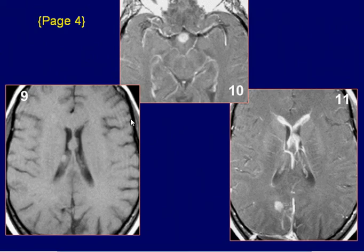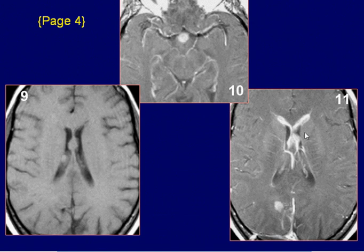Axial T1-weighted image reveals the lesions within both lateral ventricles as iso-intense lesions, and the right parietal-occipital lesion is now well seen on this image. Axial post-contrast T1-weighted image of the brain shows strong enhancement of the lesions within the lateral ventricles and right parietal-occipital region. In addition, there is linear ependymal enhancement of the lateral ventricles, especially in both frontal horns.